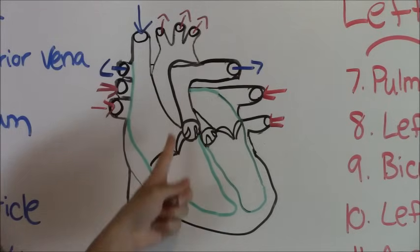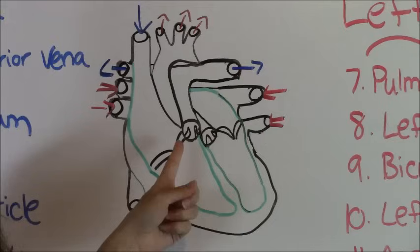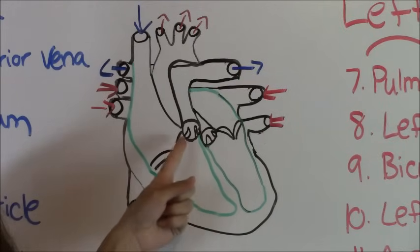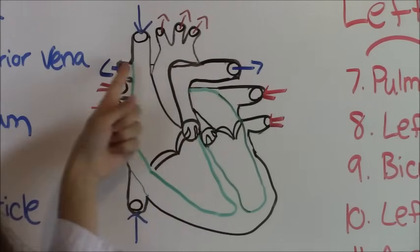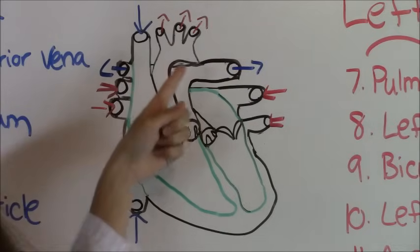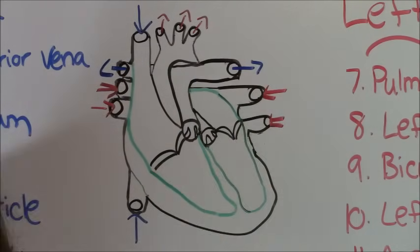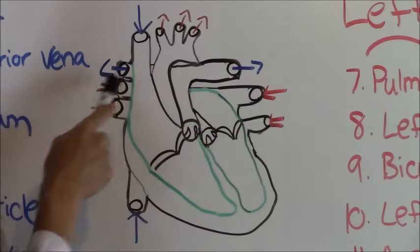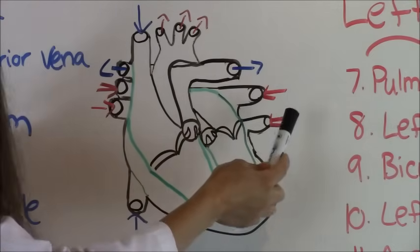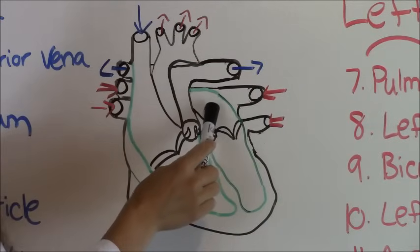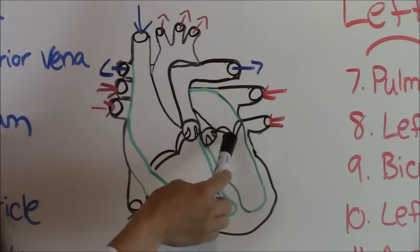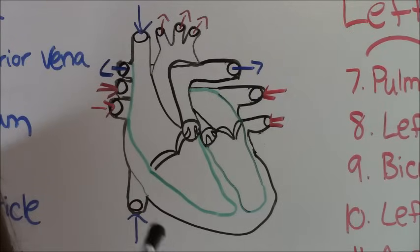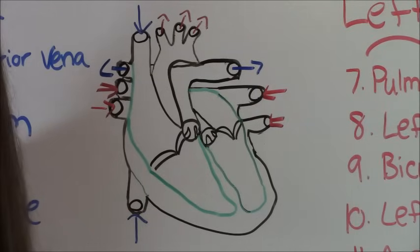Then blood shoots up through the pulmonary artery because it has to get to the lungs. In order to get to the pulmonary artery, you have the pulmonary valve. This is the pulmonary artery right here, which is sending unoxygenated blood to the lungs so it can get some oxygen. Then it enters back in through the pulmonary veins — right here are your pulmonary veins. Once it hits the pulmonary veins, it's going to go into your left atrium, shot through the bicuspid valve.